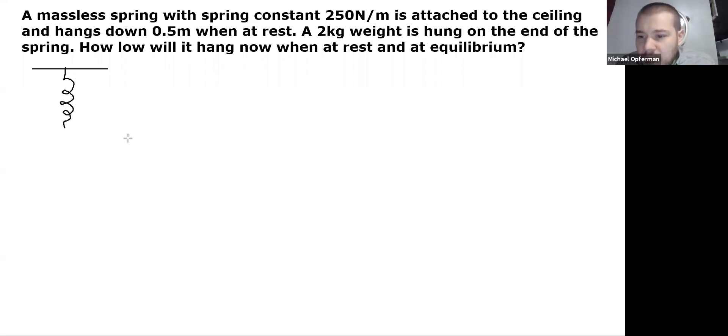Let's draw an initial picture and a final picture. This is the spring when it's at rest and happy and there's nobody hanging from it. That is going to be at a length of 0.5 meters when there's nothing hanging from it. I'm going to draw a little dashed line there just to remind me that that's where the rest length of the spring is.